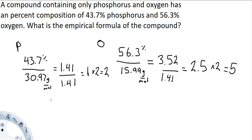So we have phosphorus here and we know that there's 2, and we have oxygen and there is 5.